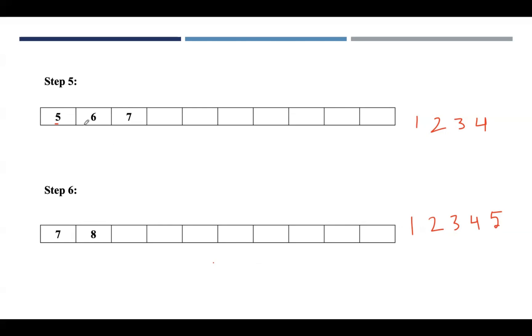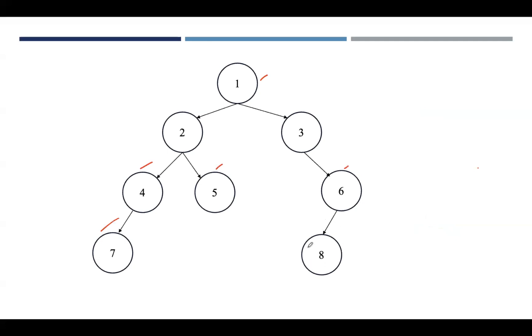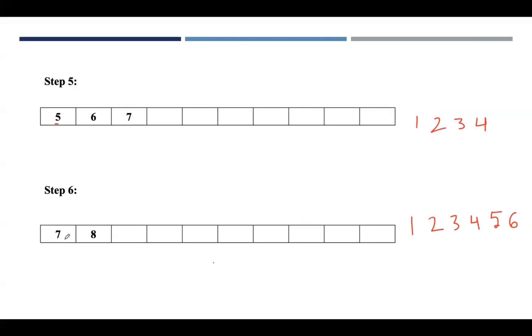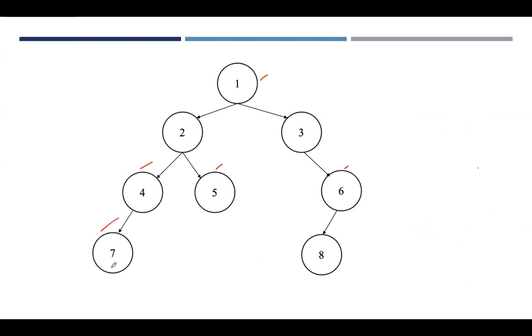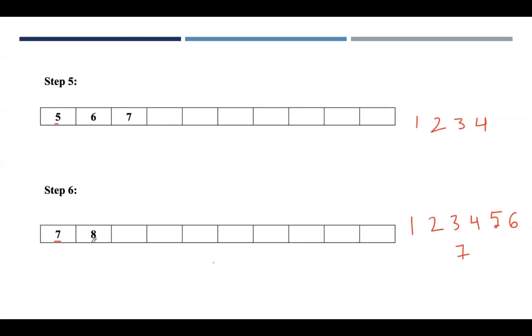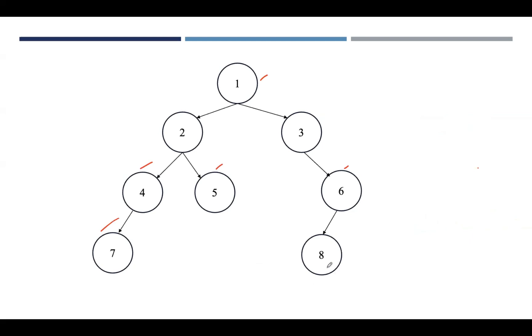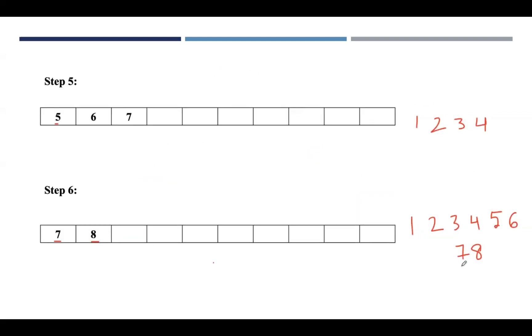Take the next element in the queue, which is 6. Pop 6 and find out adjacent vertices of 6. 6 has one non-visited adjacent vertex which is 8, so push 8 onto the queue. Next, pop 7 and find out adjacent vertices of 7. There are no vertices for 7, so leave it. Now pop 8. There are no adjacent nodes for 8, so you can stop here. This is your answer.